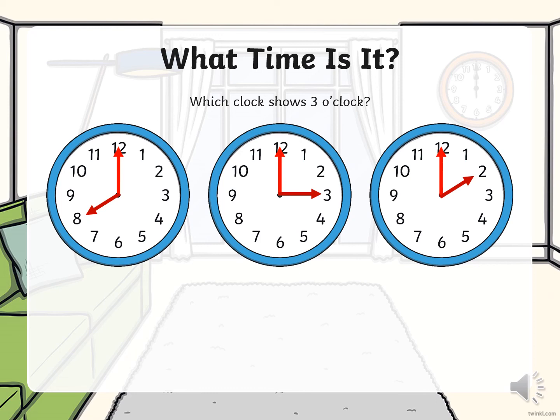What time is it? Which clock shows 3 o'clock? I want you to look carefully. Let's make sure all of the long arms are pointing to the 12, which means o'clock.